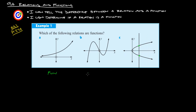So A is a function, B is a function, and C is not a function. You should now be able to tell the difference between a relation and a function, and determine if a relation is a function. If you have any questions, please ask.